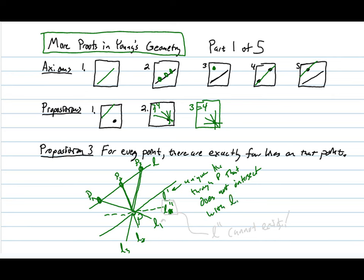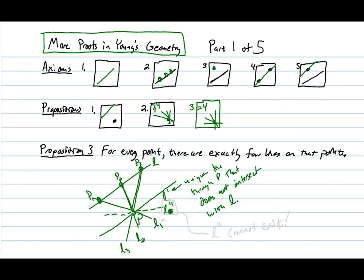So it can't intersect with L, and it cannot not intersect with L. So L double prime sort of has this identity crisis. L double prime cannot exist, and that's our contradiction.